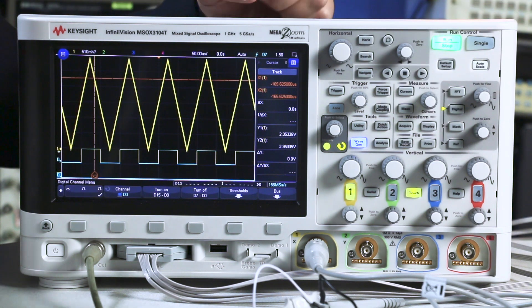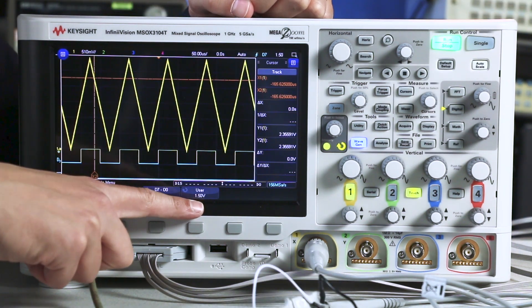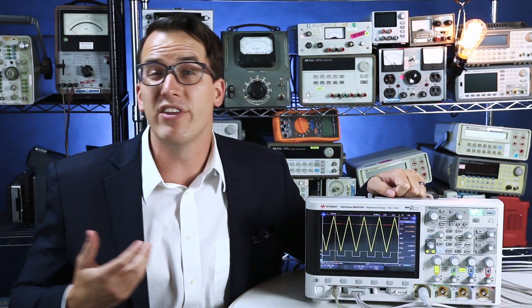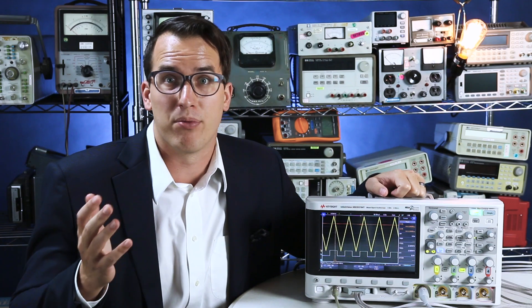I'm going to hit my digital button and then thresholds, and I can see that my threshold is set to 1.5 volts. If you're using a different protocol, you can set the scope to automatically set the threshold for that protocol.